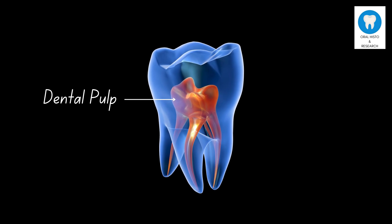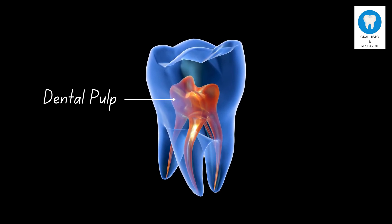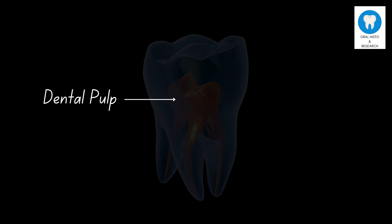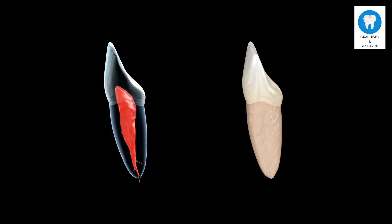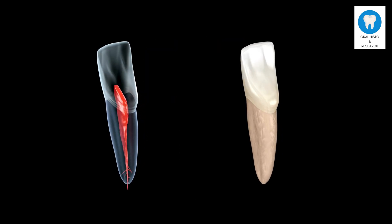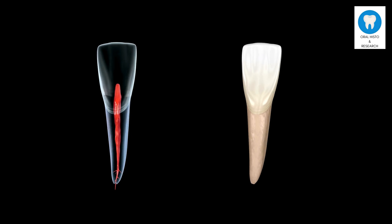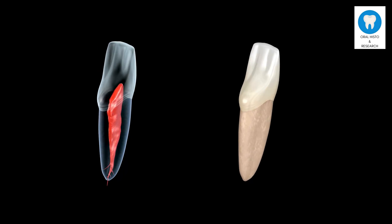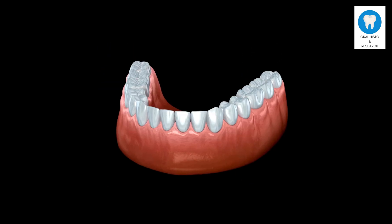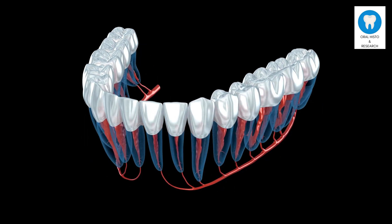The dental pulp is the soft innermost part of a tooth containing nerves, blood vessels, and connective tissue. It extends from the crown of the tooth to the tip of the roots within the root canals. The dental pulp is essential for the development and growth of the tooth, and it provides sensory function, allowing you to feel temperature and pain.